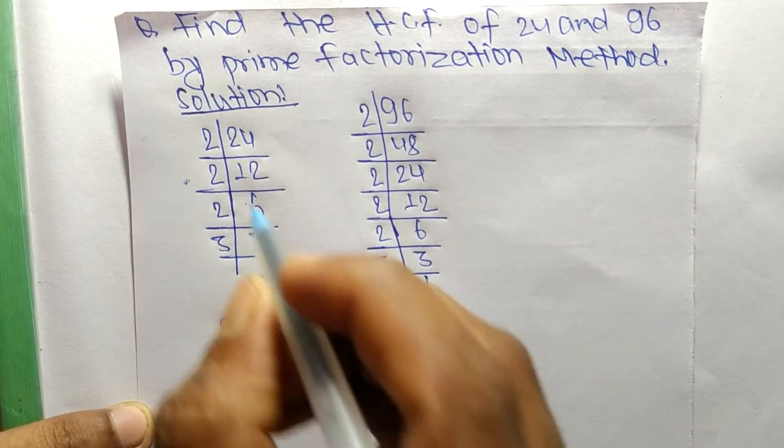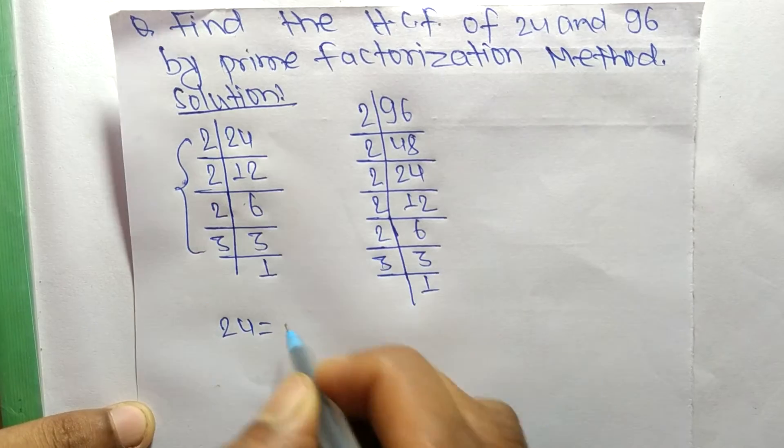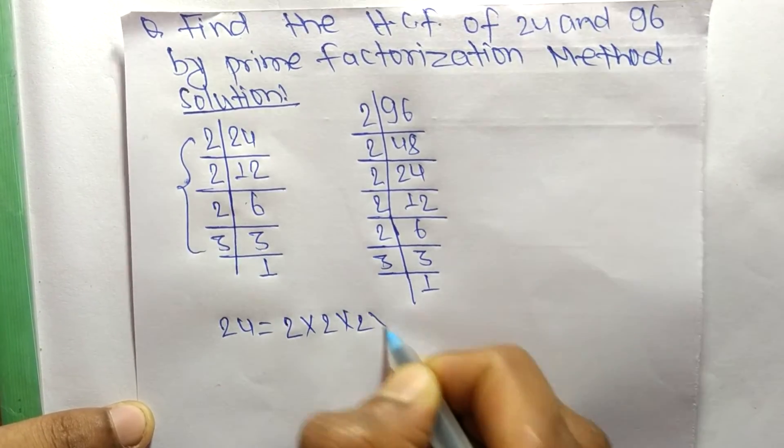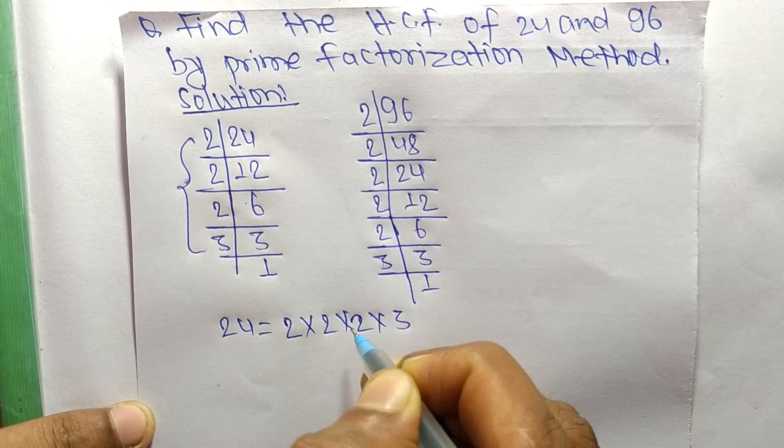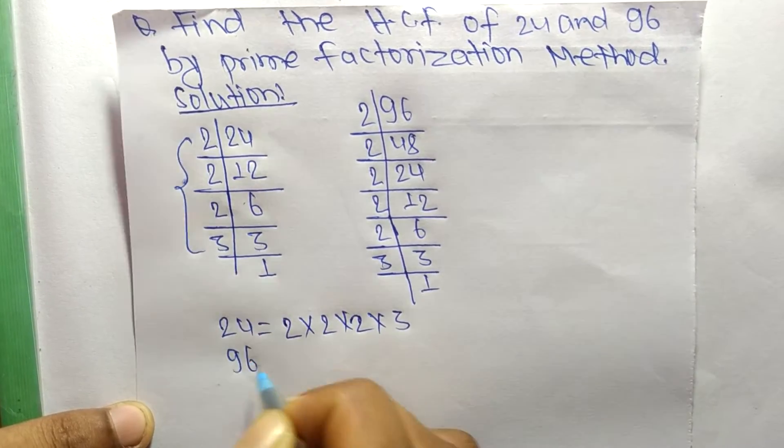24 equals 2 times 2 times 2 times 3. Likewise, 96 equals: